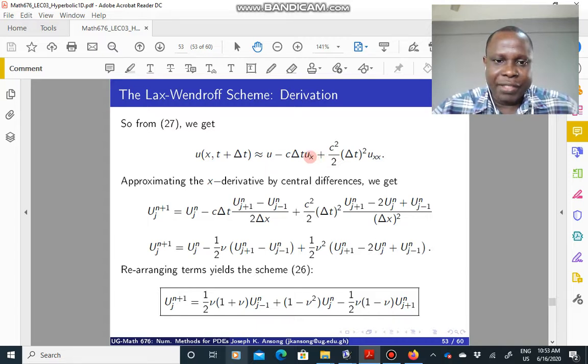And so what you do next is just use central differences for the first order in x, and then the second order in x. And then if you do that, you get u to the level n plus 1, equal to u at the time level n minus this guy. So u_x here is given by this. For second derivative, u_xx is given by this. You can rearrange this.